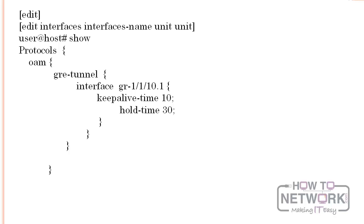You can also use Bidirectional Forwarding Detection, or BFD, in conjunction with your GRE tunnels to help accomplish the same basic functionality. We cover BFD in more detail in the High Availability chapter.